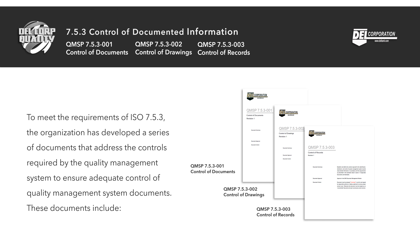To meet the requirements of ISO 7.5.3, the organization has developed a series of documents that address the controls required by the quality management system. These documents include QMSP 7.5.3-001 Control of Documents, QMSP 7.5.3-002 Control of Drawings, and QMSP 7.5.3-003 Control of Records.